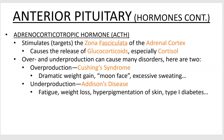Overproduction of ACTH can cause Cushing syndrome, which involves obesity, a rounded face with extra fat under the skin, excess sweating, and a number of other symptoms. Underproduction can cause Addison's disease, which has an interesting symptom of hyperpigmentation — a light-skinned person with Addison's disease would look like they had done a lot of fake tanning.